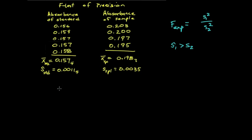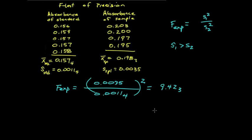So let's apply this equation, and let's calculate an experimental value for F. So the bigger variance goes on top, and the smaller one on the bottom. Now I'm going to take advantage of the fact that both of these are squared. Take the ratio first, and then square them. It should be the same result. And we get a number of 9.423. We need to look this up in a table.